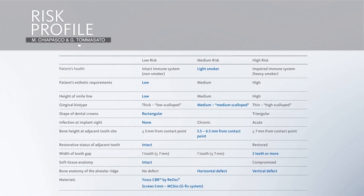General clinical conditions are good. She is a light smoker. The patient's aesthetic requirements are low because we have to restore the posterior mandible on both sides. The height of smile line is low. There is a medium scalloped gingival biotype. The shape of dental crown series is rectangular. There are no infections on the remaining dentition. The bone height at the adjacent tooth site is favorable. Soft tissue anatomy is intact.